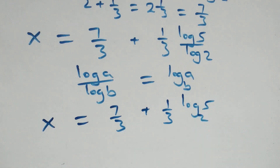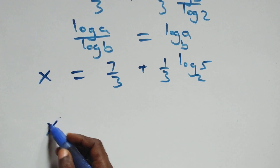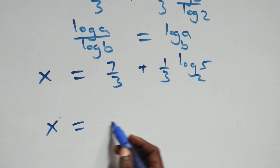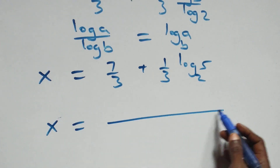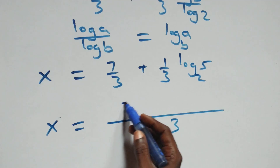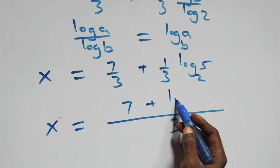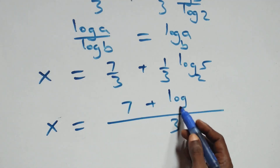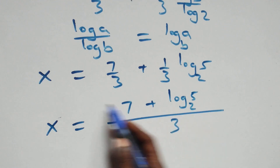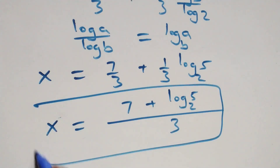We can bring this together as one fraction over 3, and we have x equals 7 plus log₂5, all over 3. That is, the value of x is (7 + log₂5) / 3.